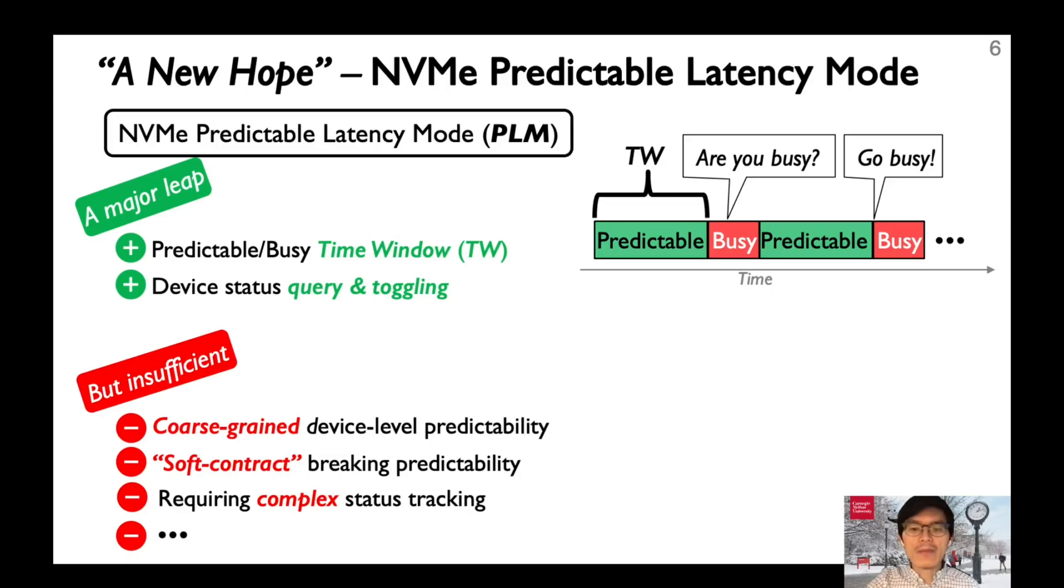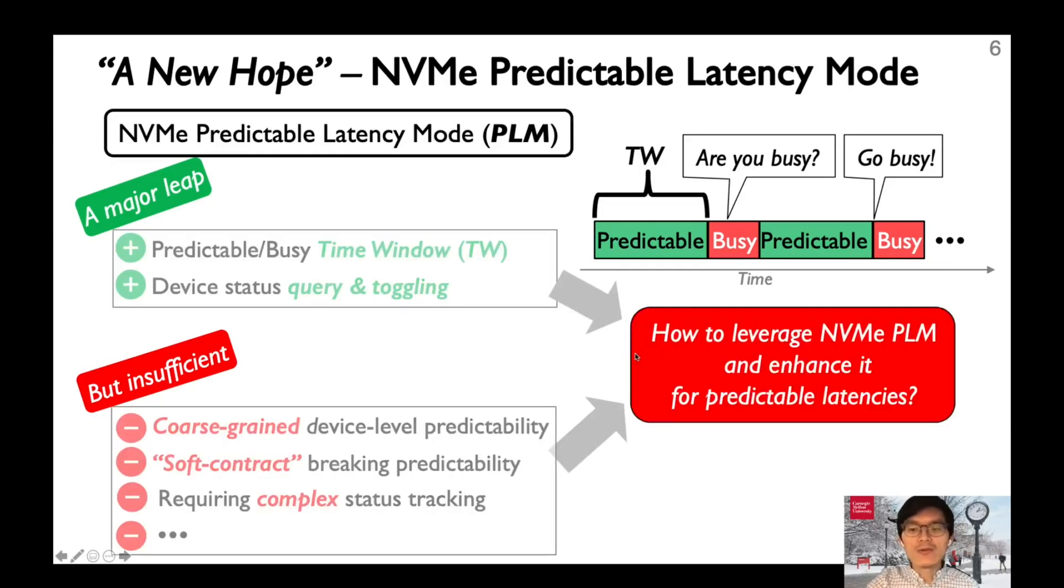However, the current PLM interface is still insufficient. For example, the device level predictability is too coarse-grained for modern SSDs with many NAND channels. It is a best-effort, soft contract. The device can autonomously transit to the busy state and break the predictability guarantee. So the question we want to ask here is how to leverage the PLM interface and enhance it for predictable latencies.